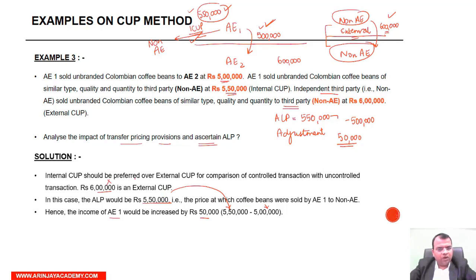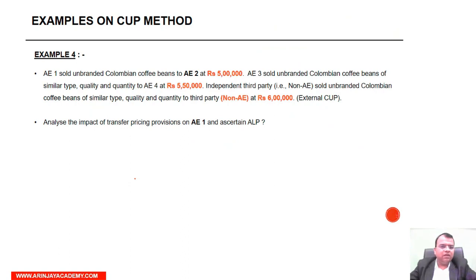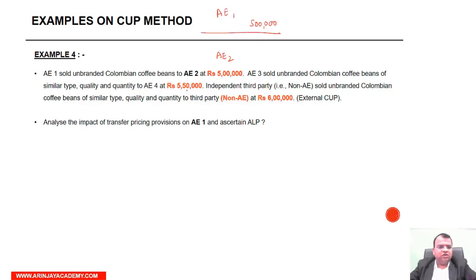Let's look at one more example. AE-1 sold coffee beans to AE-2 at rupees 5,00,000. AE-3 sold coffee beans of similar type etc. at rupees 5,50,000 to AE-4. Now there are two other related parties — AE-3 and AE-4 — who have a transaction of rupees 5,50,000.